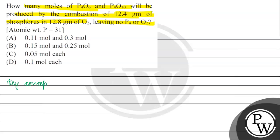The key concept for this question is to look at the reactions. P4 plus 3 moles of oxygen gives us P4O6, and P4 plus 5 moles of oxygen gives us P4O10.